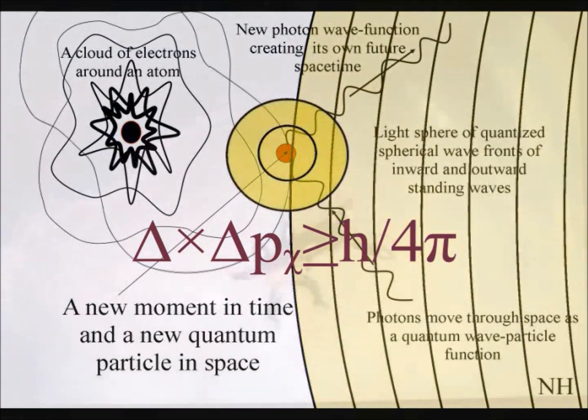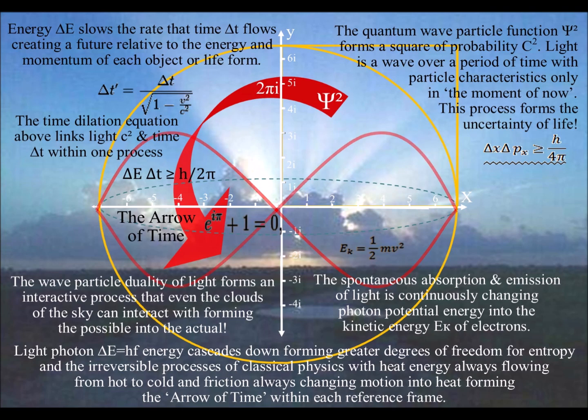Potential photon energy is continuously cascading down from the sun, transforming potential energy into kinetic energy of the electrons.